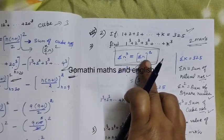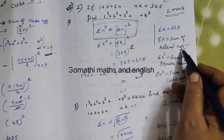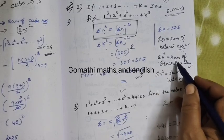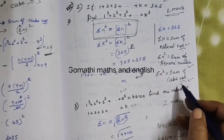Sigma n cube equal to sigma n the whole square. Sigma n is sum of natural number, sigma n squared sum of square number, sigma n cube means sum of cube numbers.